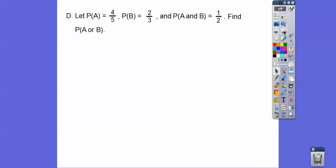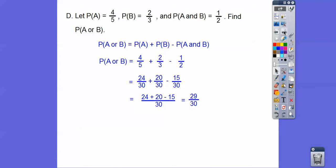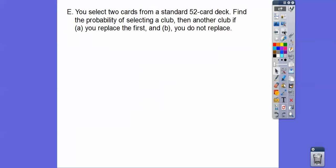Let the probability of A equal 4/5, the probability of B equals 2/3, and the probability of A and B equals 1/2. Find the probability of A or B. We're using that formula: the probability of A or B is the probability of A plus the probability of B minus the probability of A and B. Plug those in, get common denominators, clean it up, and you get 29/30.